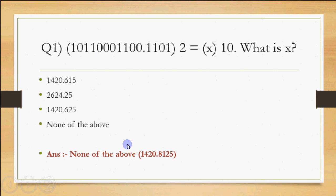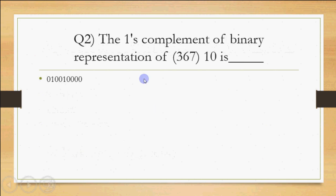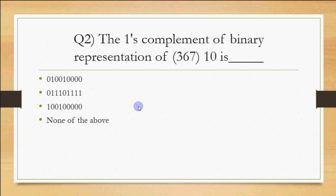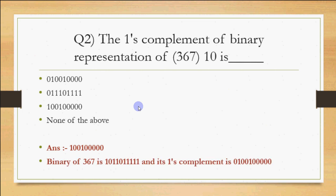Question 2: the 1's complement of the binary representation of 367 (decimal) is given as options. You have to do two jobs: first, convert 367 to binary; then find the 1's complement of that binary. To get the binary of 367, we keep dividing by 2 and collect the remainders from bottom to top.